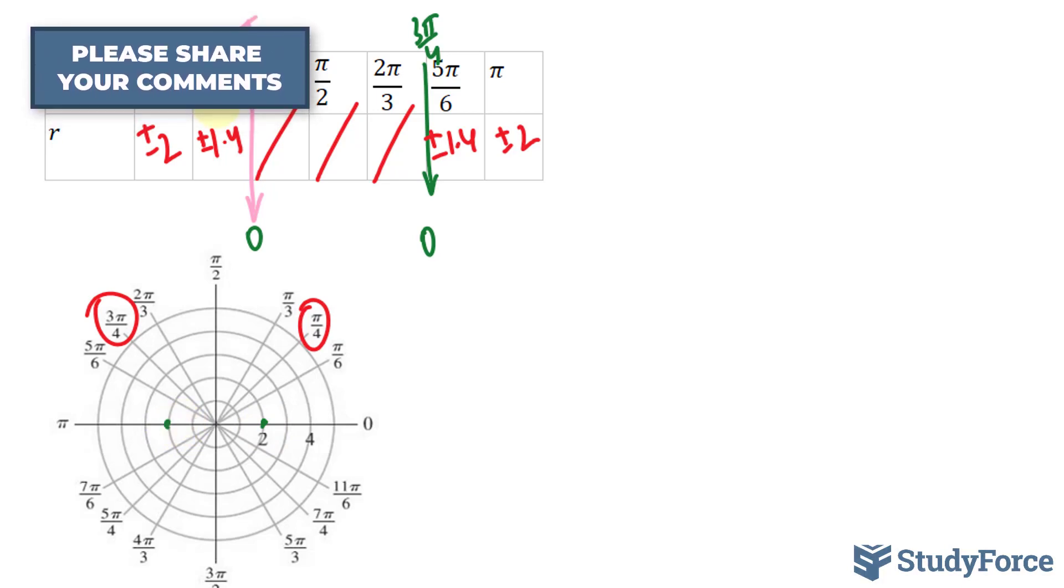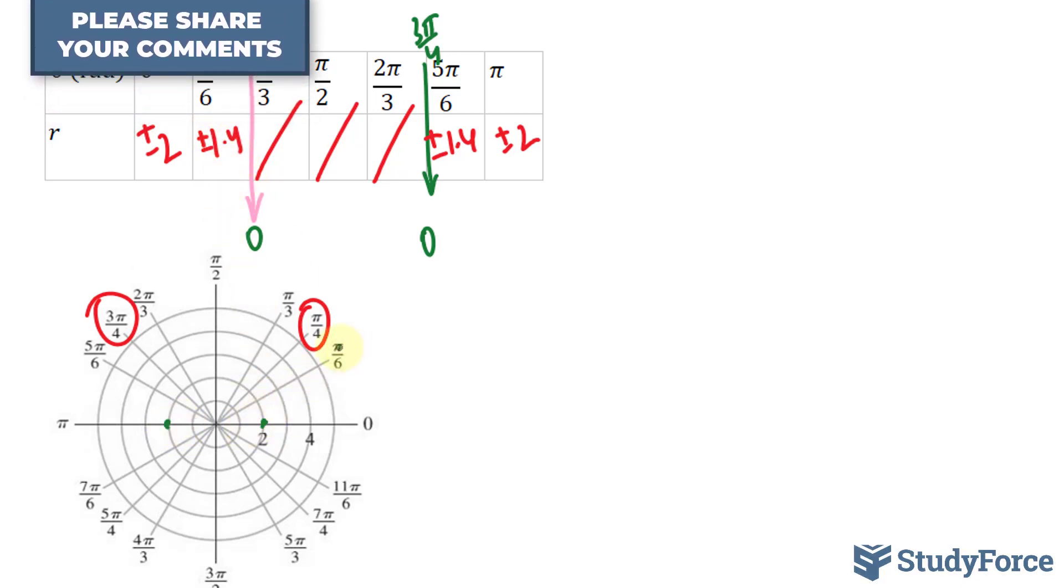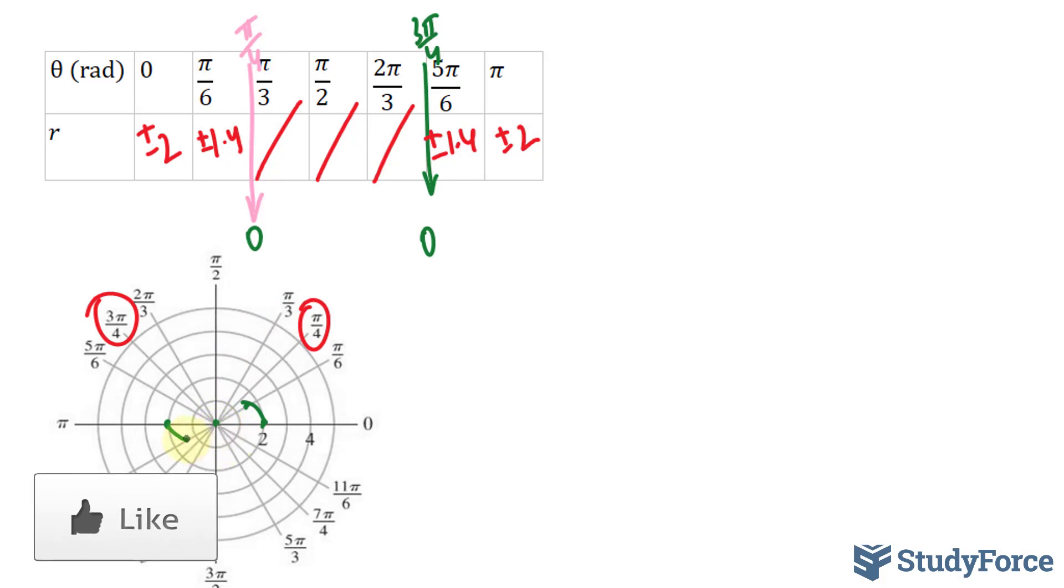Next, we have pi over 6, and the radius is plus minus 1.4. Pi over 6 is this ray, and plus minus 1.4 is a little more than the first ring, just in between. And negative 1.4 should be over here. At pi over 4, it's 0. We have a point here. This will connect, and so will this.